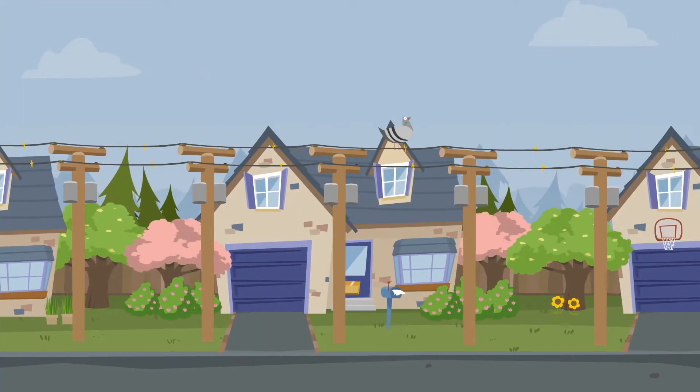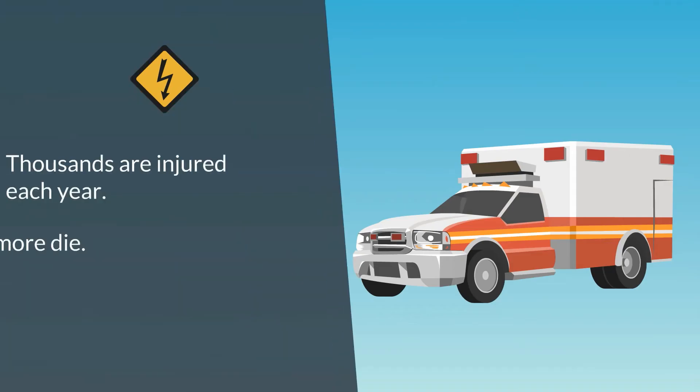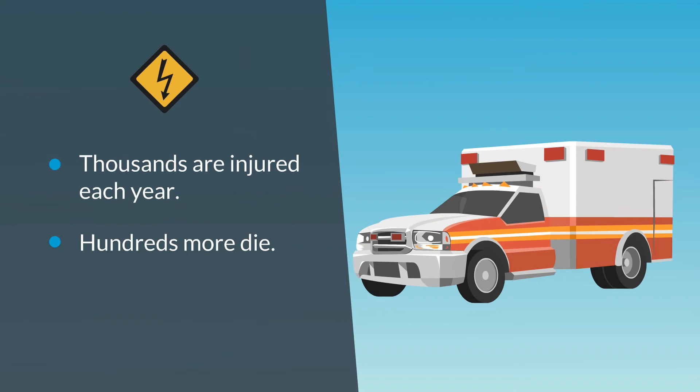If people down below make contact with that wire, even through something like a ladder, stick or kite string, they become a path for electricity to reach the ground. People are injured or killed each year from contact with electricity.